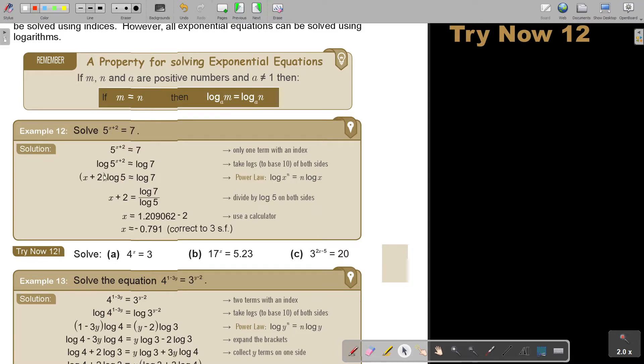The best approach is to take both sides and divide by log 5. Then take that one over, the positive 2 becomes negative 2. Take your calculator and approximate to three significant figures.